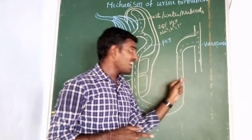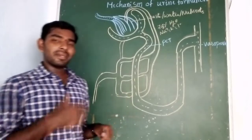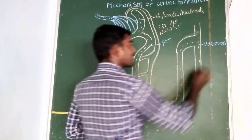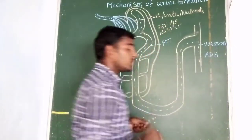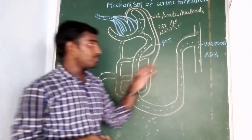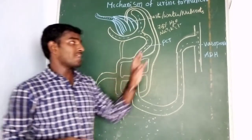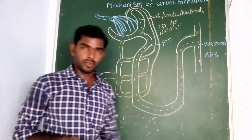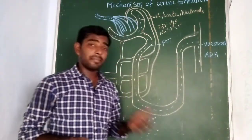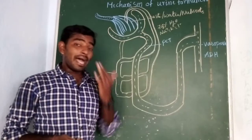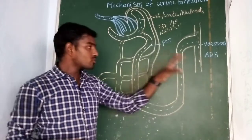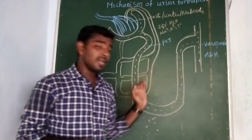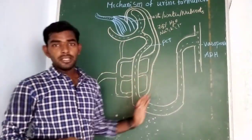If vasopressin is released along with the blood, the person is not affected with diabetes. Vasopressin is also known as anti-diuretic hormone (ADH). In the absence of vasopressin, the person is affected with diabetes and will produce diluted urine. If vasopressin is being released, the person is not affected with diabetes and will produce concentrated urine, which is maintained by the tubular secretions of the DCT and the loop of Henle.